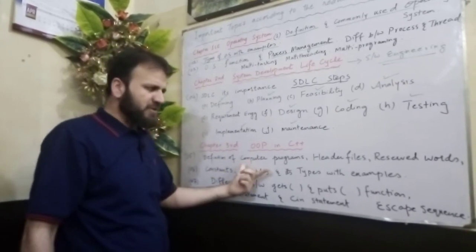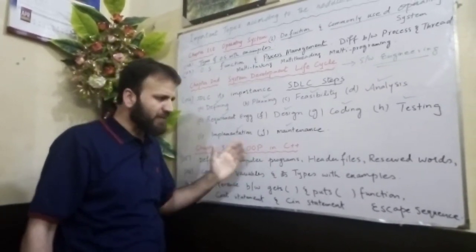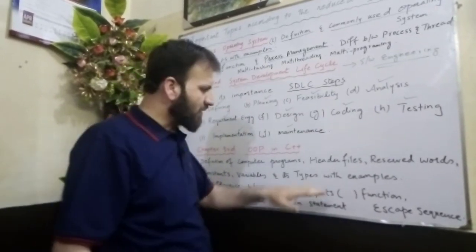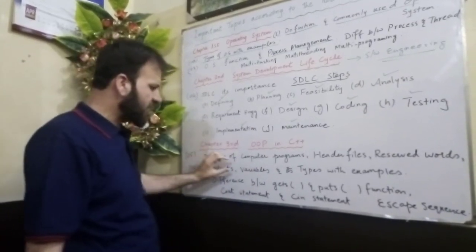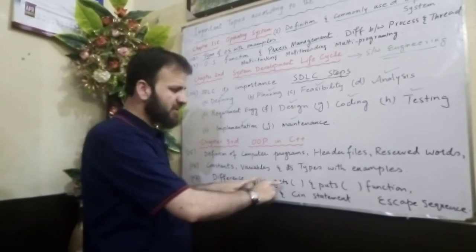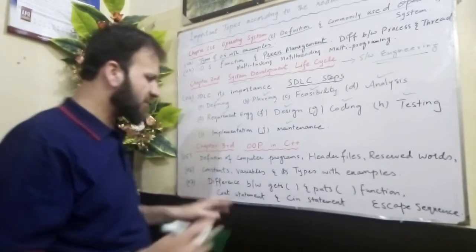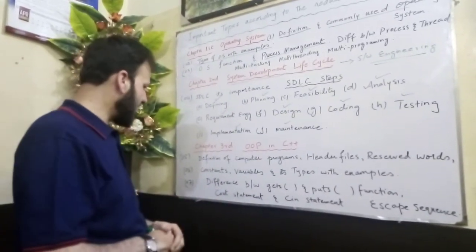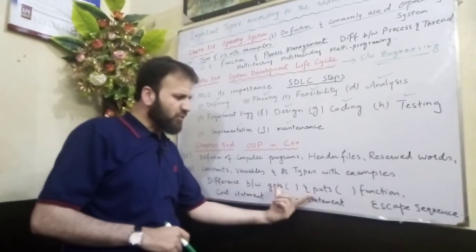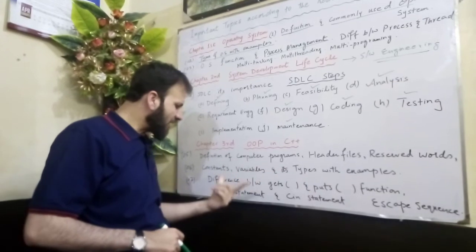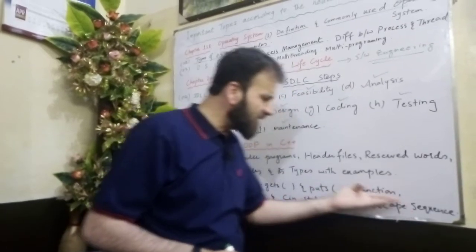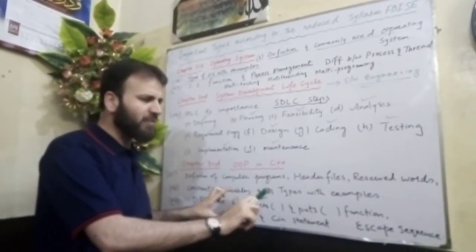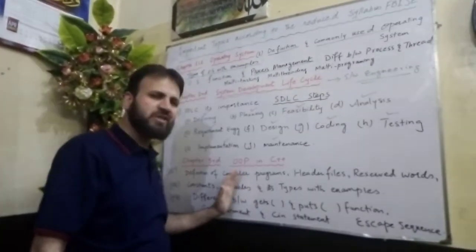Chapter three belongs to programming. First, the definition of computer programs — this is where programming starts. You should know the definition of header files and reserved words, as these can appear as short questions. Learn the definition of constants and variables and their types — the difference between constants and variables, numeric variables, string constants, numeric constants. Also learn the difference between get and put functions, the difference between cout and cin statements, and what escape sequences are. All these definitions can appear as short questions in papers.